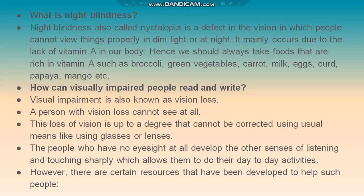Even visually impaired people can read and write. Visual impairment, also known as vision loss, means a person cannot see at all, and this loss of vision cannot be corrected using usual means like glasses or lenses. People with no eyesight develop other senses of listening and touching more sharply, which allows them to do their day-to-day activities.